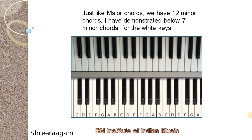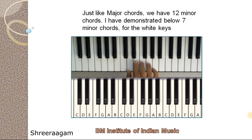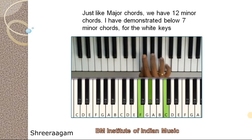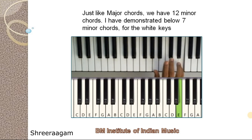Just like major chords, we have 12 minor chords also. I have demonstrated minor chords based on white keys. The first chord is C minor, next is D minor, then F minor. The next chords are G minor, A minor, and the last chord is B minor.